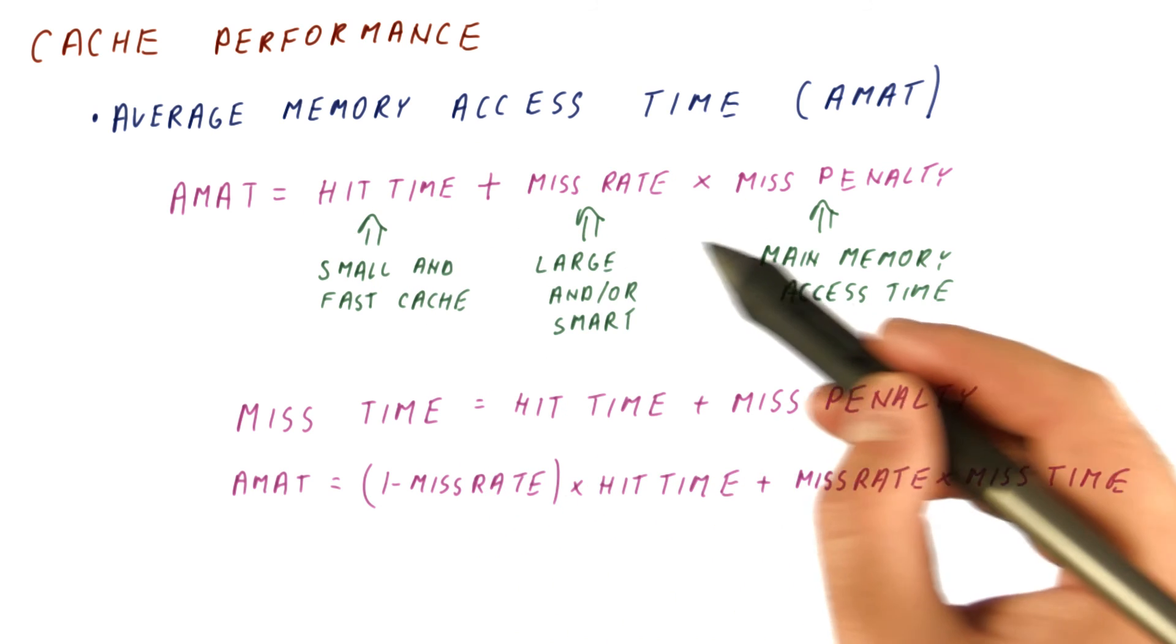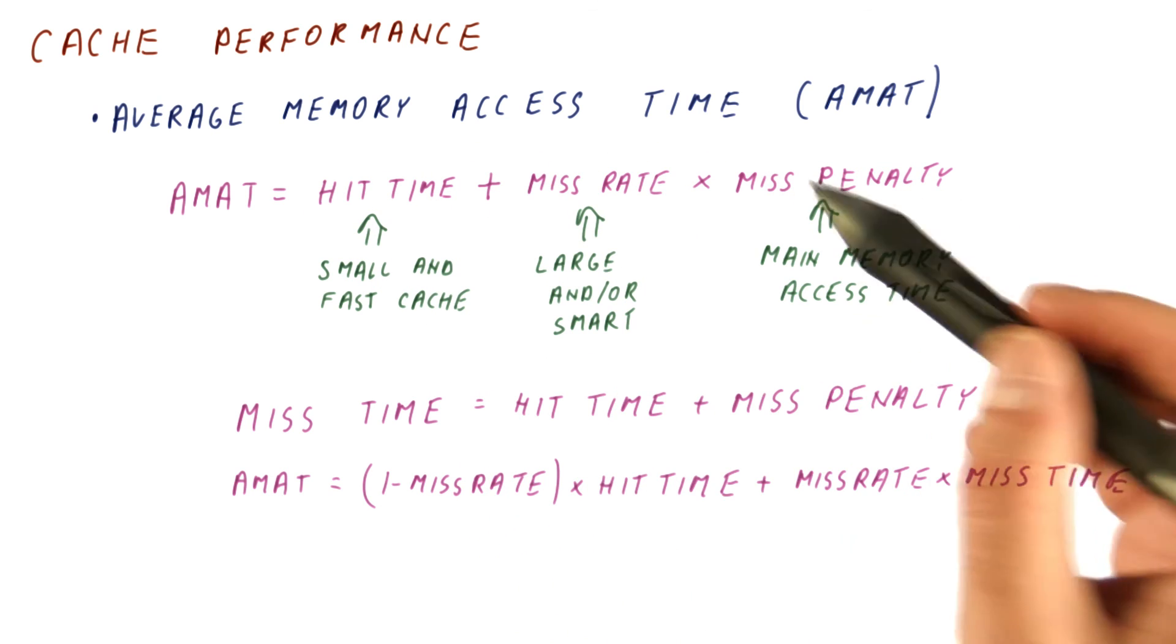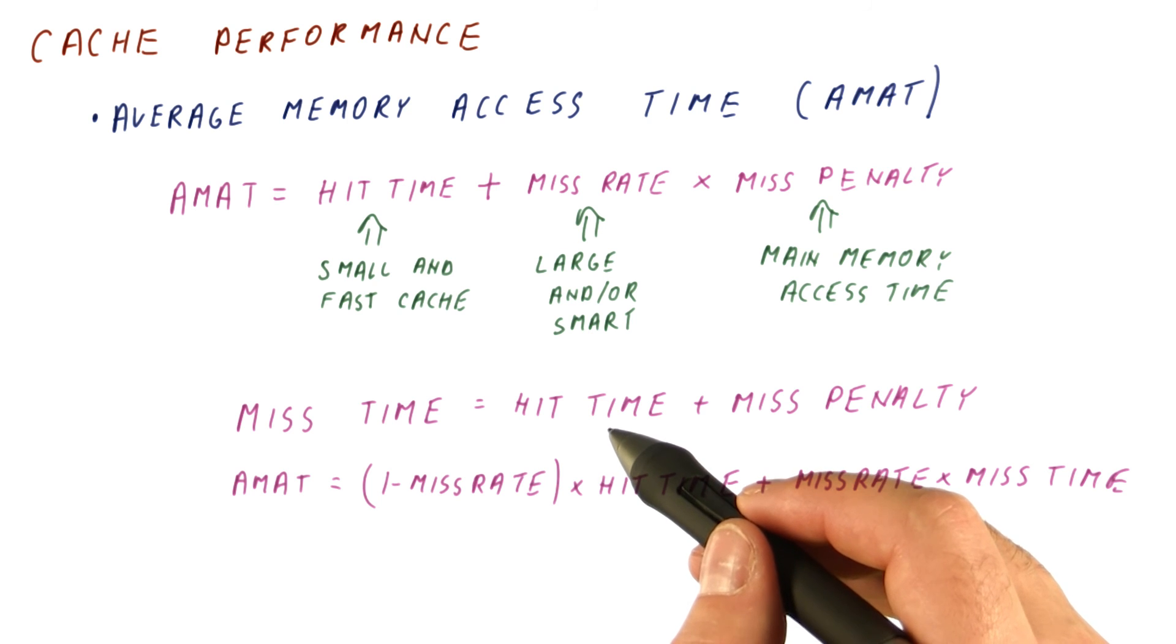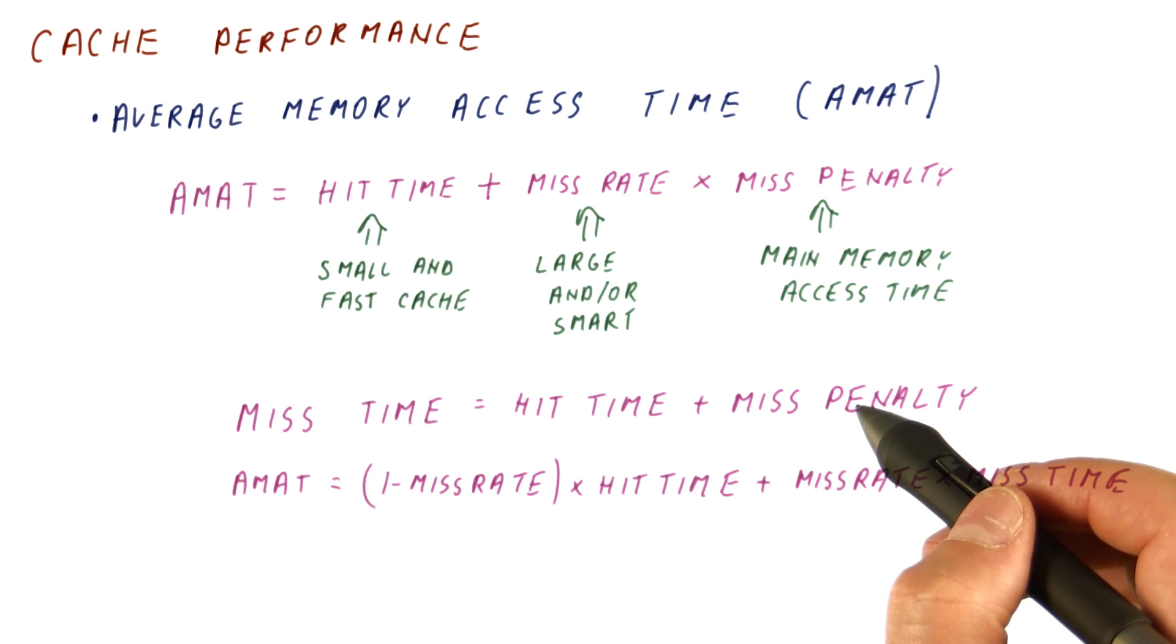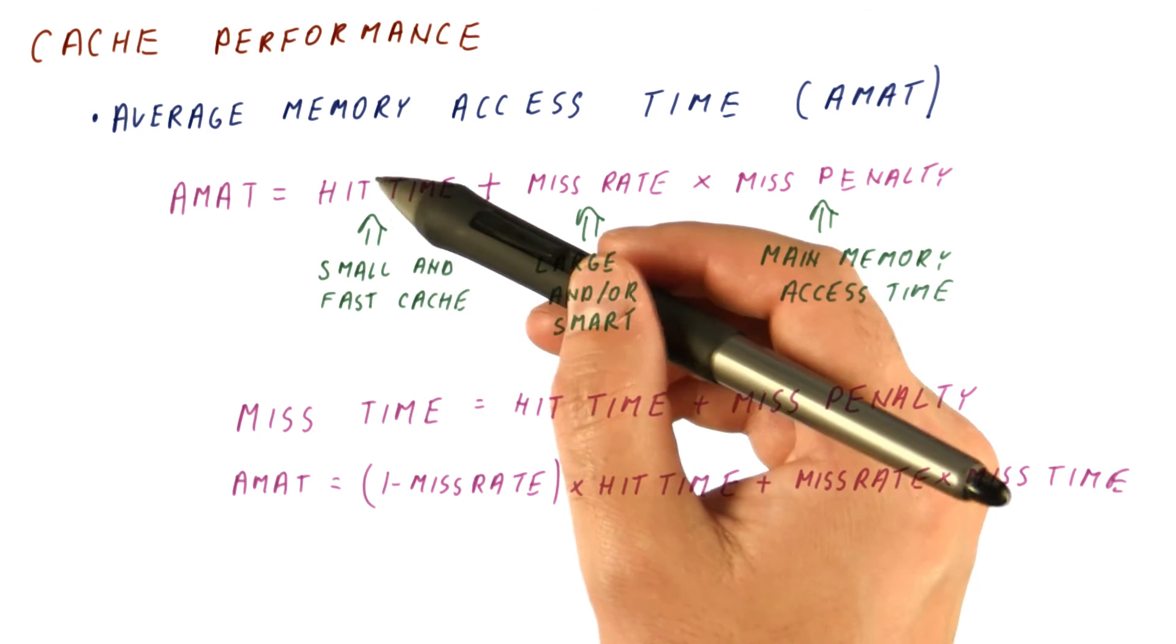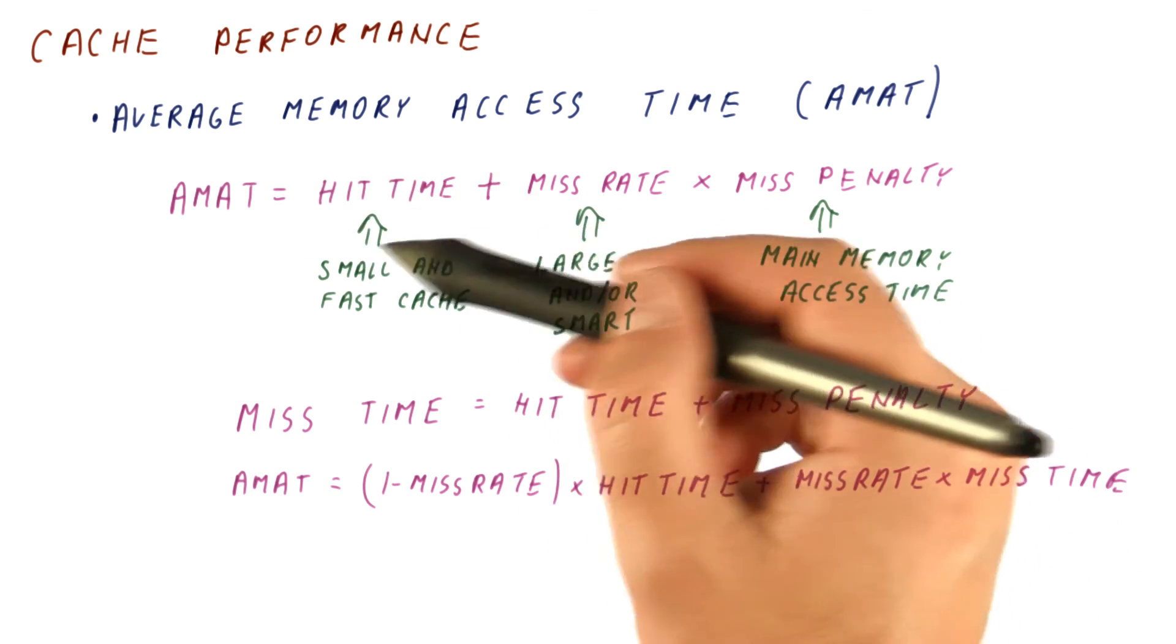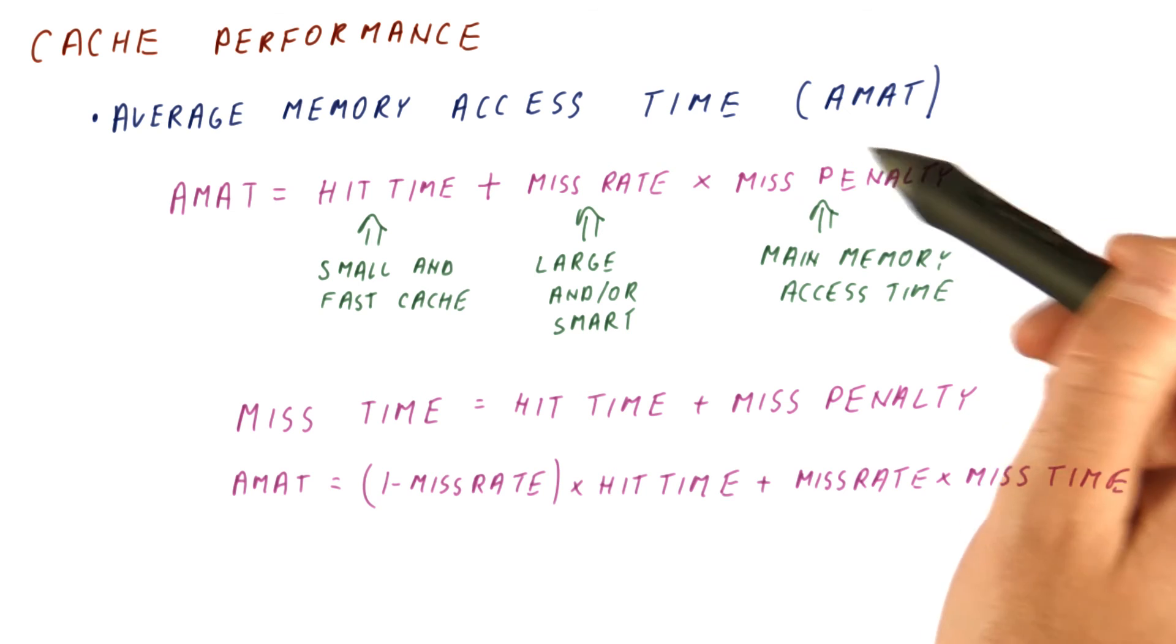Usually, we want to use this expression simply because the miss time typically includes checking whether what we have is in the cache, followed by whatever we need to do on a miss. So somehow, every time we will have the time it takes to hit, but sometimes we will also pay the miss penalty.